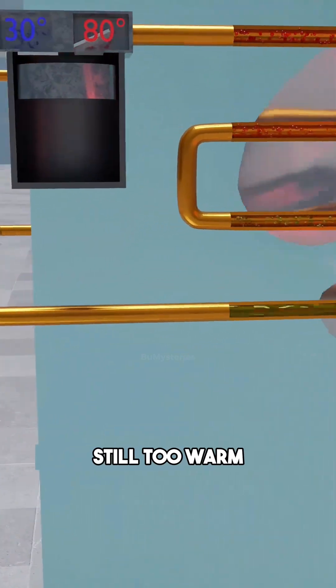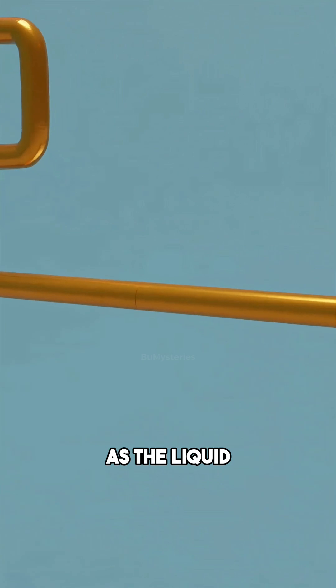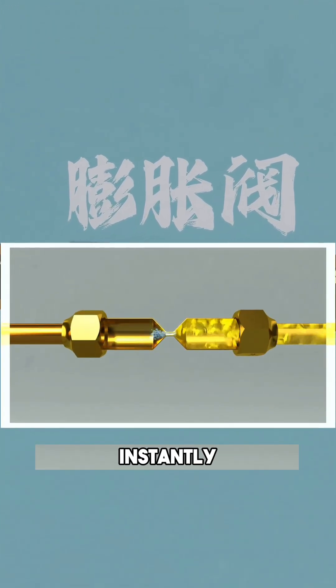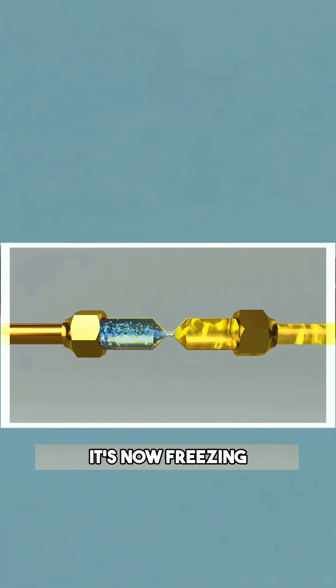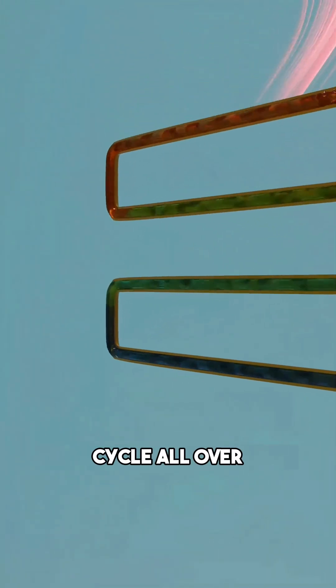The liquid is still too warm to cool your room. So, you install an expansion valve. As the liquid passes through this tiny opening, the pressure drops instantly and the temperature plummets. It's now freezing cold and ready to head back indoors to start the cycle all over again.